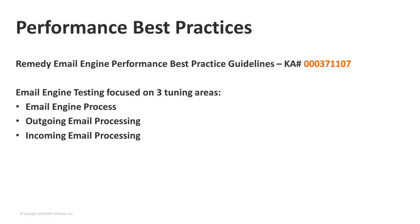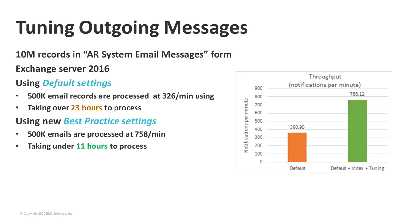Let me talk about the testing we did. For outgoing messages, we created a queue of about 10 million records in the messages form and used Exchange Server 2016, monitoring until 500,000 emails had been sent. With default settings, about 326 messages per minute were sent, taking a little over 23 hours to process those 500,000 emails. With the tuning parameters we recommend, those 500,000 emails were processed at a rate of about 758 per minute, taking under 11 hours — quite a substantial savings in time.